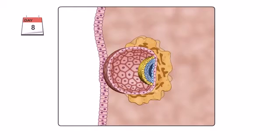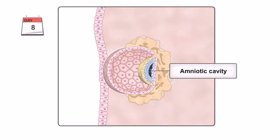Soon after the embryonic disc has formed, a cavity begins to appear between the epiblast and the cytotrophoblast, known as the amniotic cavity.